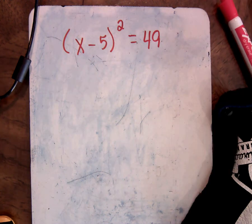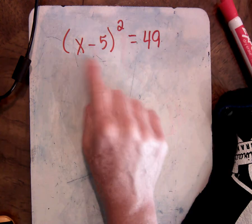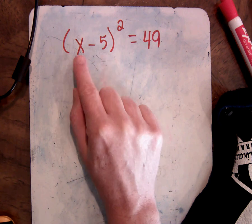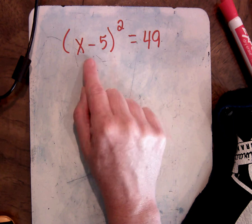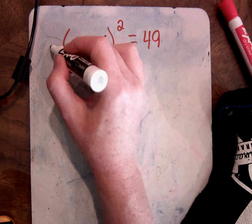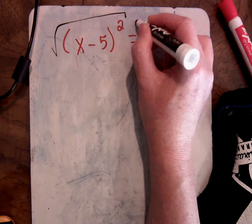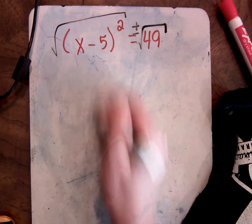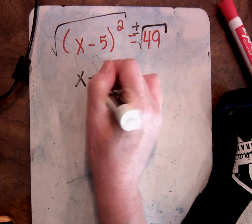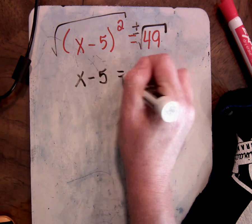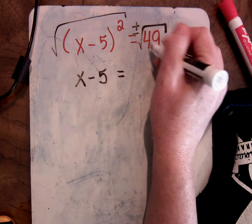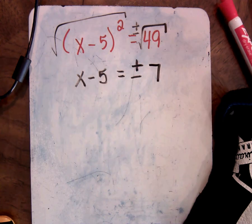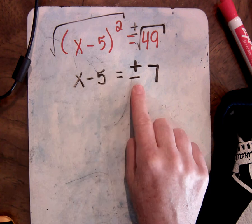Okay, so this one, we have a square of a binomial. So that's why we can use the square root method on this one. Remember, you can't touch anything inside the parentheses until we get rid of the exponent. So I'm going to go straight to taking positive or negative the square root. Okay, so that leaves me x minus 5. Now, 49 is a perfect square. So I'm going to go ahead and take the square root of it. So positive or negative 7.